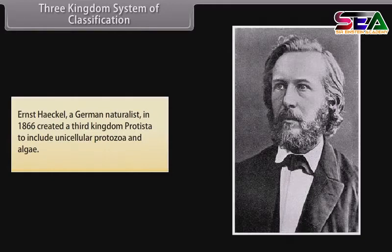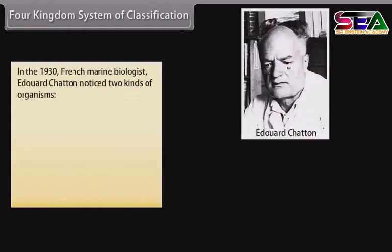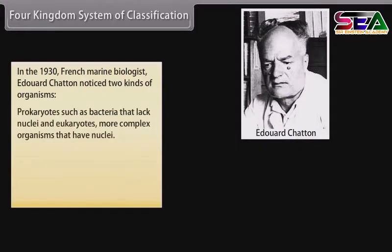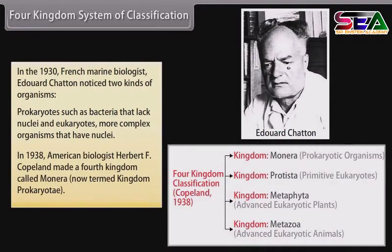Ernst Haeckel created a third kingdom, Protista, to include unicellular protozoa and algae. In the 1930s, French marine biologist Edouard Chatton noticed two kinds of organisms: prokaryotes, such as bacteria, that lack nuclei, and eukaryotes, more complex organisms that have nuclei. In 1938, American biologist Herbert F. Copeland made a fourth kingdom called Monera, now termed kingdom Prokaryote.